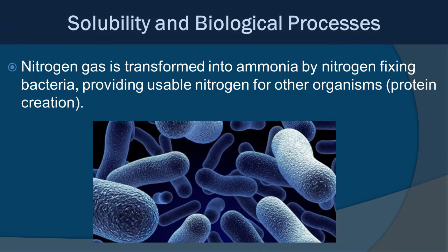We've mostly been talking about carbon dioxide and oxygen, but nitrogen gas is also an important component — we'll learn more about that in the nitrogen cycle later in the year. Nitrogen is transformed into ammonia by nitrogen-fixing bacteria. This is important because it provides a usable form of nitrogen for organisms, which they use to form proteins and other organic molecules.